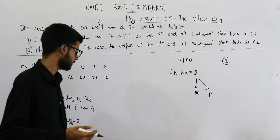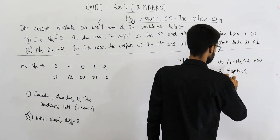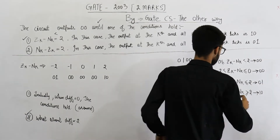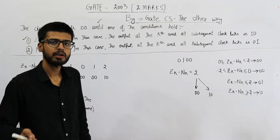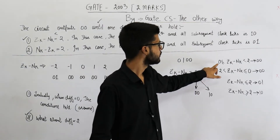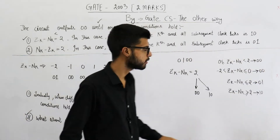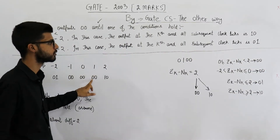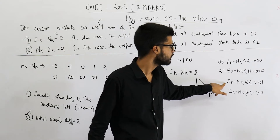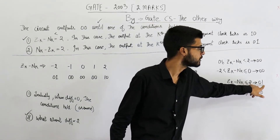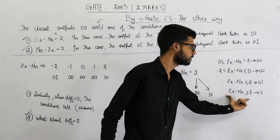Let me write those corrected conditions. Had they mentioned these conditions with a less-than sign, the question would have been easier to understand. If the value of zk minus nk is 0 or 1 — that is, less than 2 — the output must be 00. Similarly, if the value is minus 1 or 0, still the output must be 00. If the value is less than or equal to minus 2, the output must be 01.